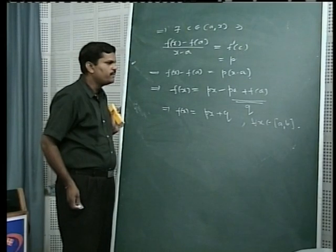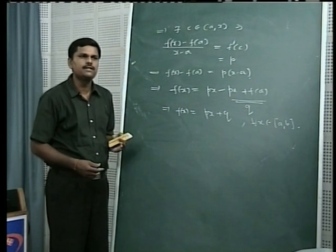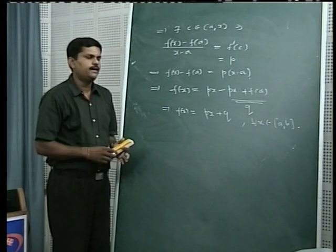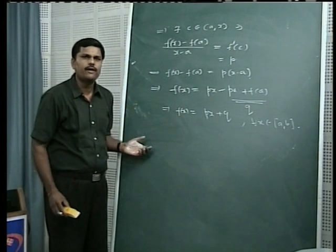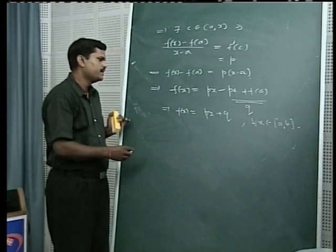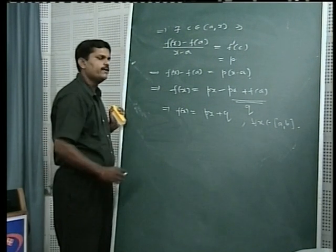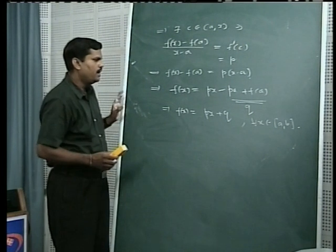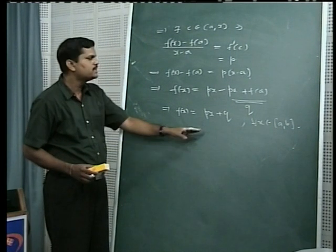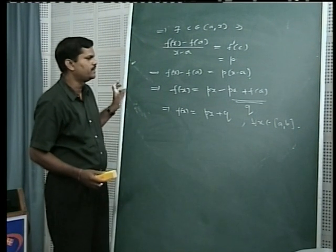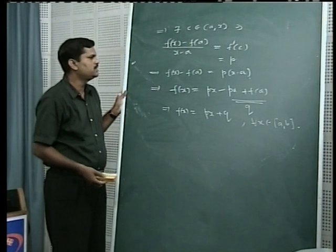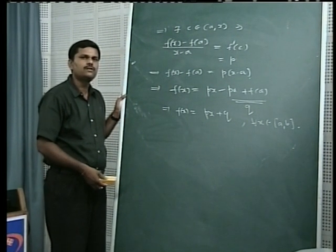So we have obtained that formula: if a function f is twice differentiable and the second derivative is zero for every x in the closed interval [a, b], then f(x) = px + q. The function must be this linear function in one variable. So this is the solution of this problem.